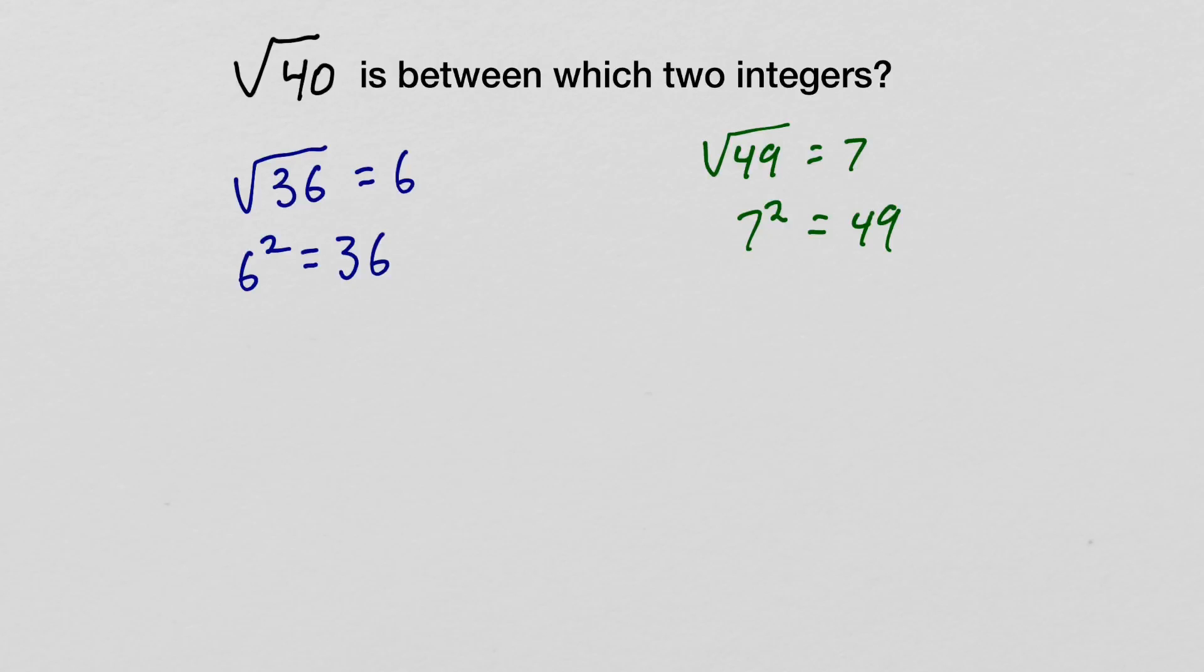Here we found something important. We have the square root of 40, which is what we're looking for, and we've said that it falls between the square root of 36, which is 6, and the square root of 49, which is 7. So the square root of 40 is between the integers 6 and 7.